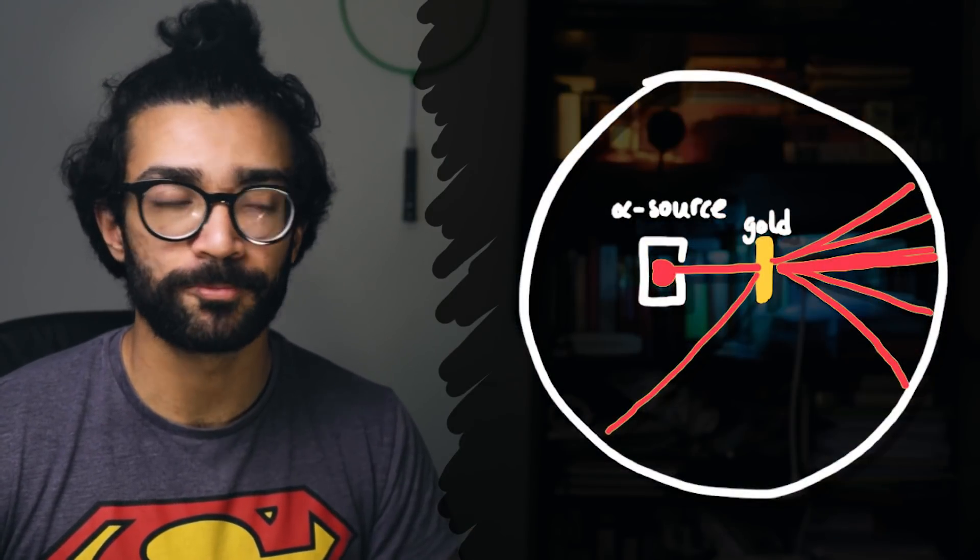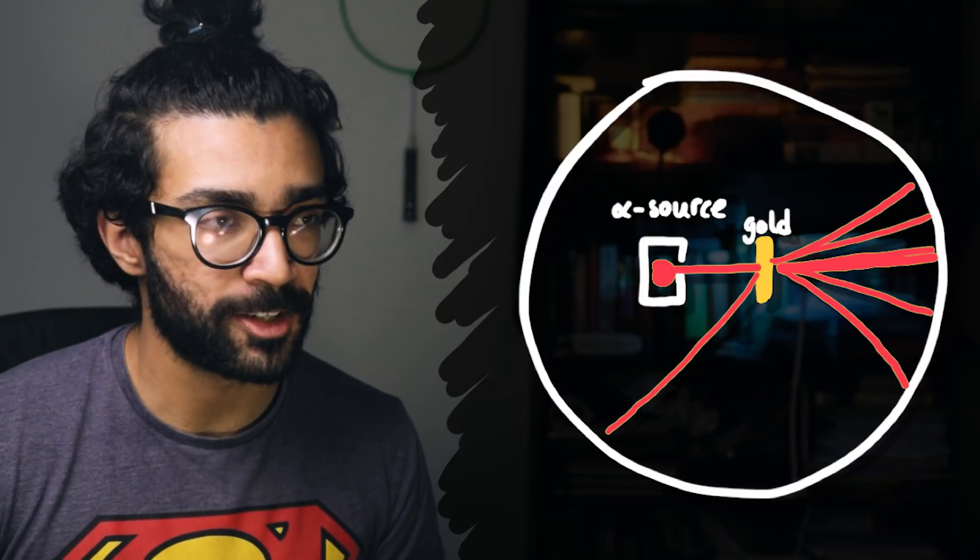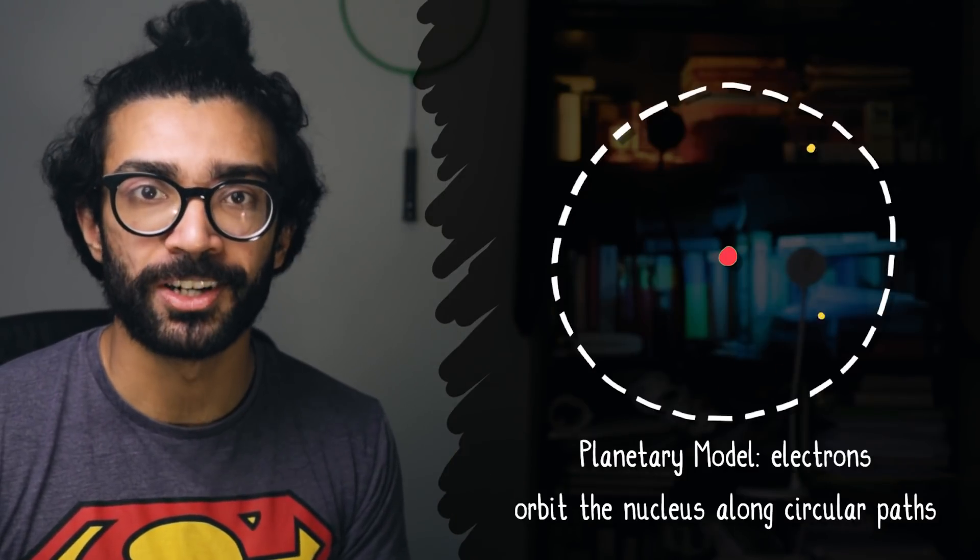So definitely keep an eye out for that in the coming weeks. In the meantime though, let's get going with this video. Early in the 20th century, Ernest Rutherford concluded from his gold foil experiment, technically conducted by Geiger and Marsden, that an atom consisted of a small but dense region of positive charge at the centre, surrounded by a large region of negatively charged electrons.